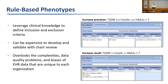If you're a physician, you may be able to build more complex rule-based phenotypes by leveraging clinical knowledge to define inclusion and exclusion criteria. To increase precision, you might say: patients who have type 2 diabetes AND have been prescribed insulin AND have an elevated hemoglobin A1C. To increase recall, you use ORs instead of ANDs.